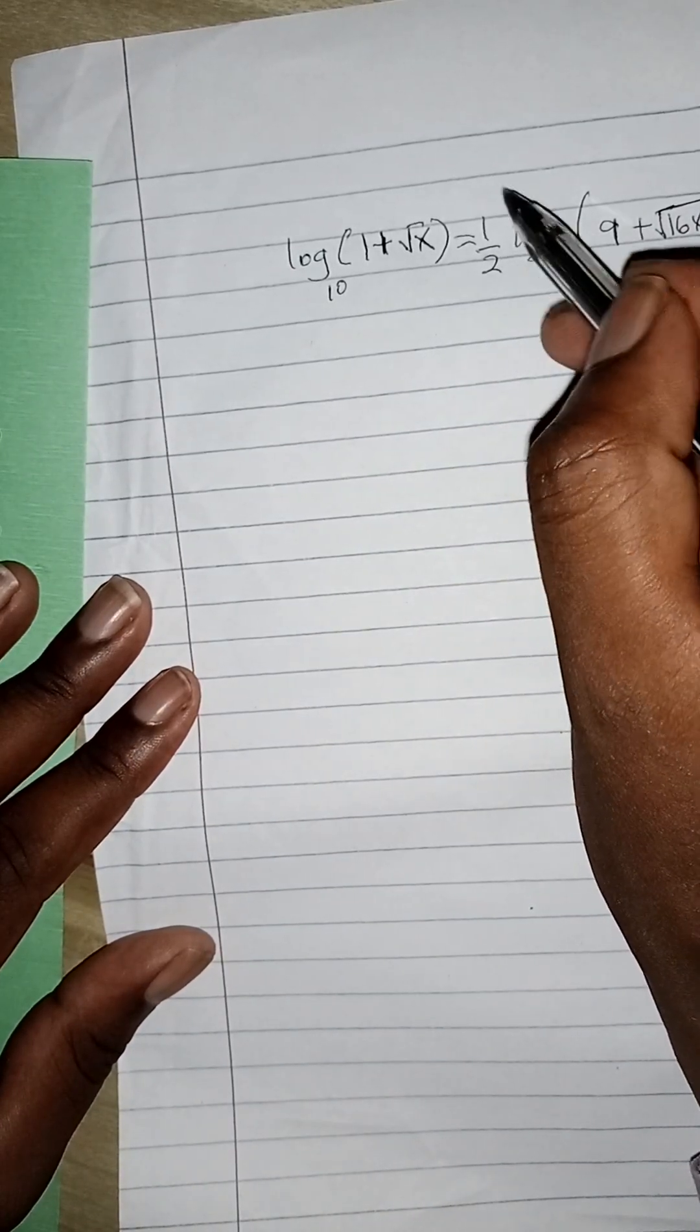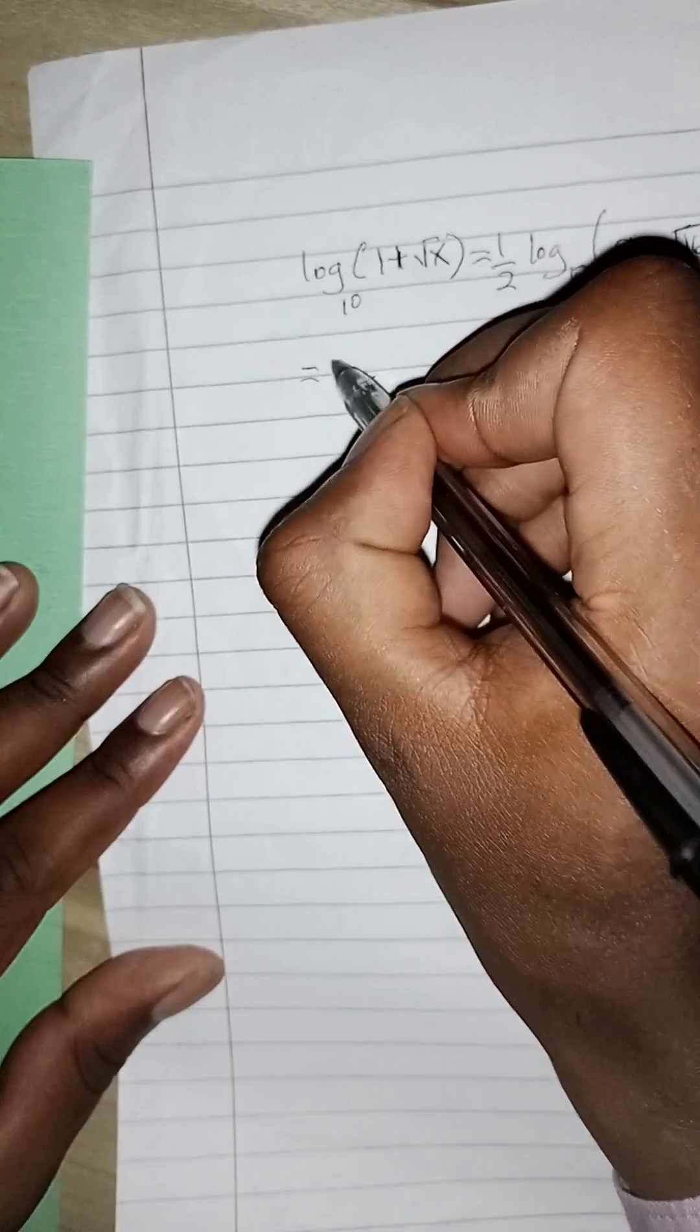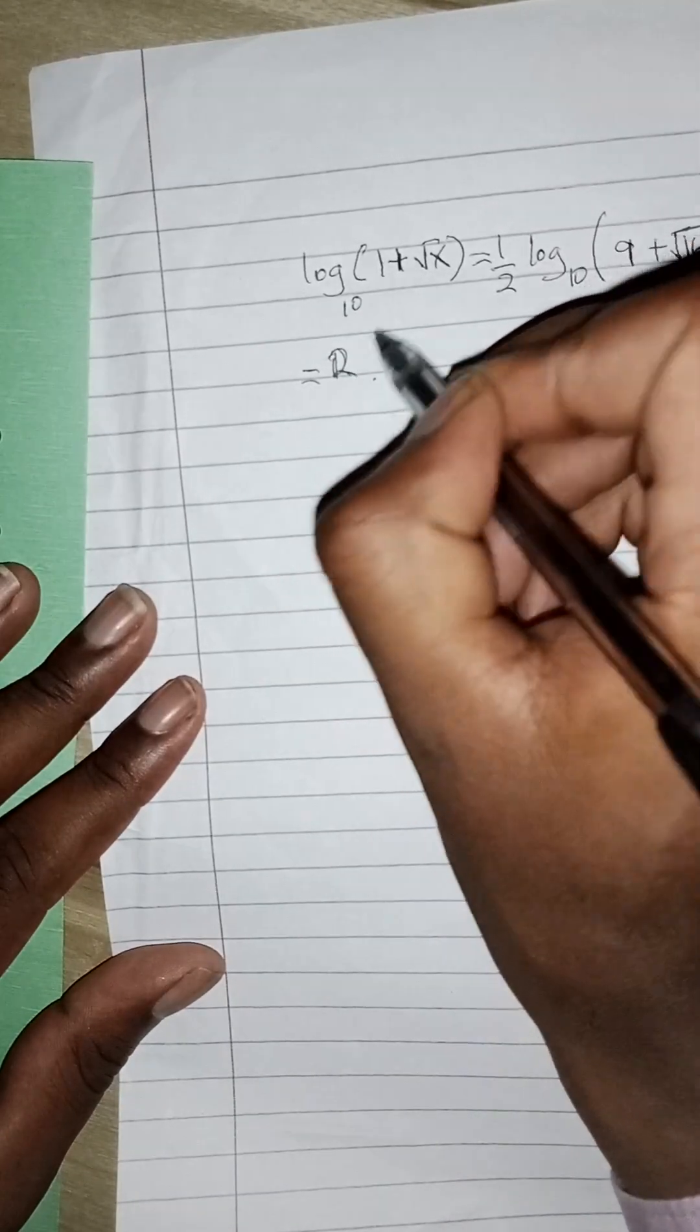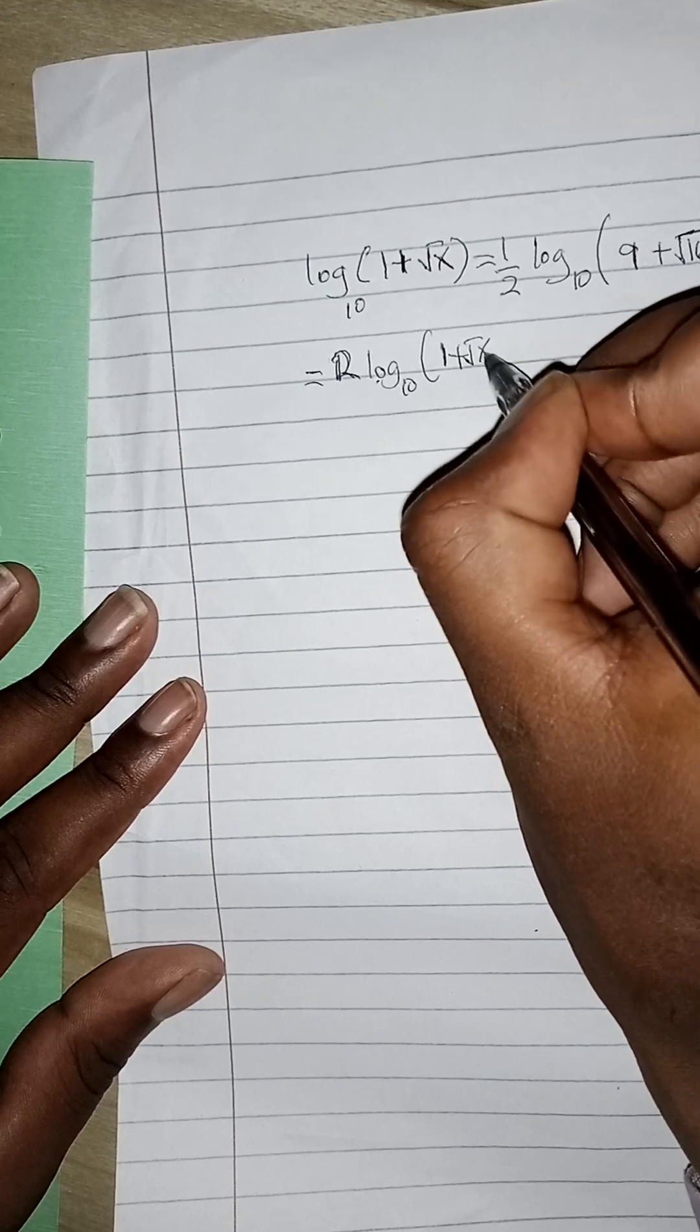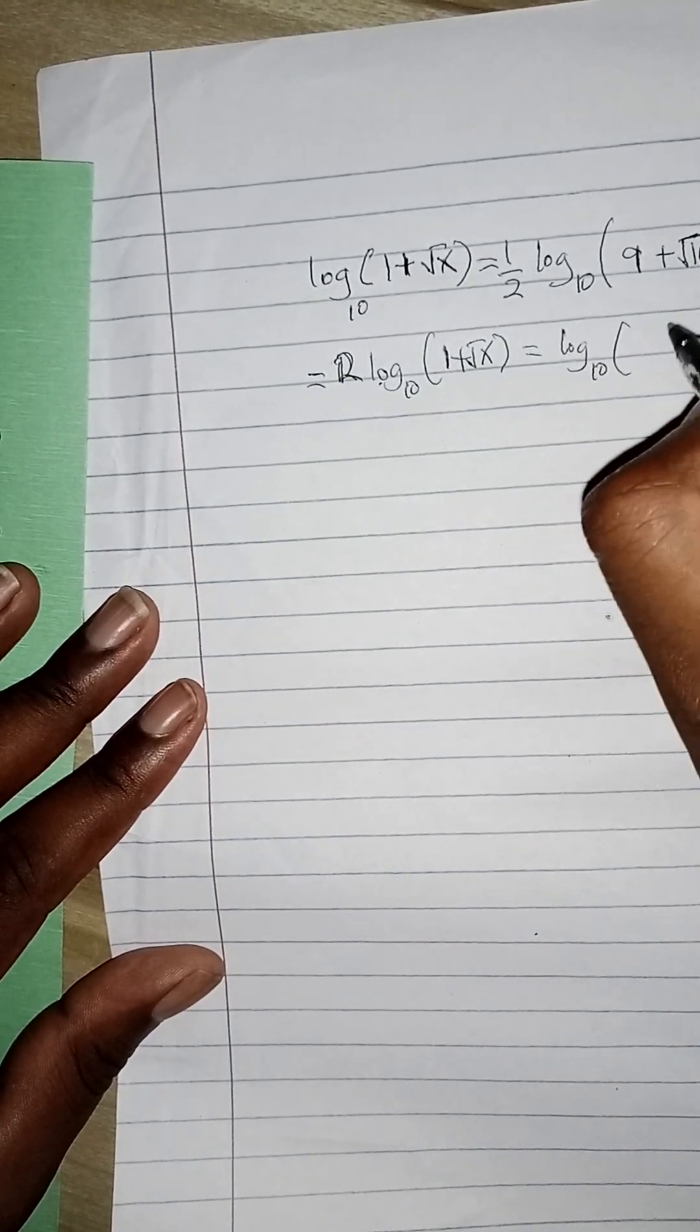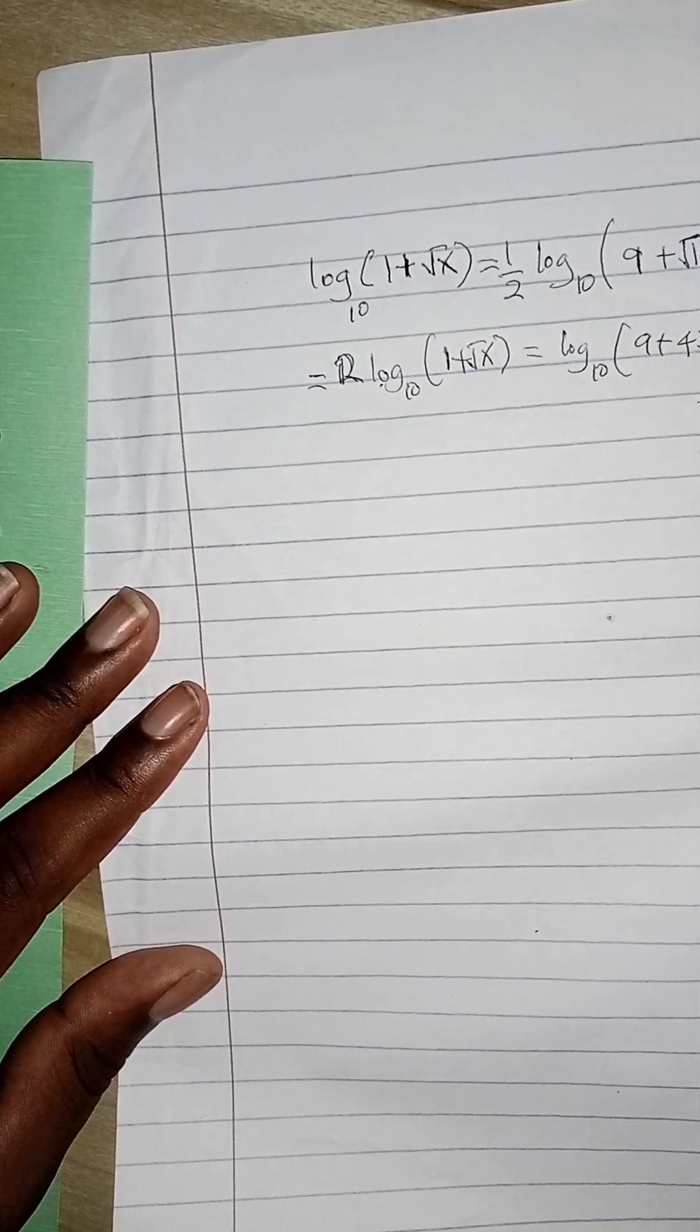I want to get rid of this half here, I'm going to multiply both sides by 2. So if I do that, I'm going to get 2 multiply here by 2 and here by 2. Log to base 10 (1 plus root of x) equals to log to base 10 into brackets (9 plus... now 16 root x can be written as 4 root of x, right).